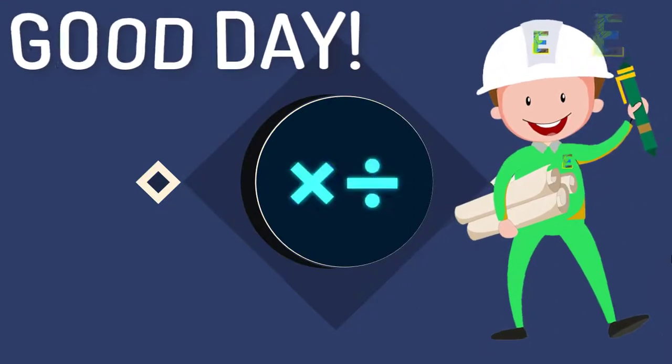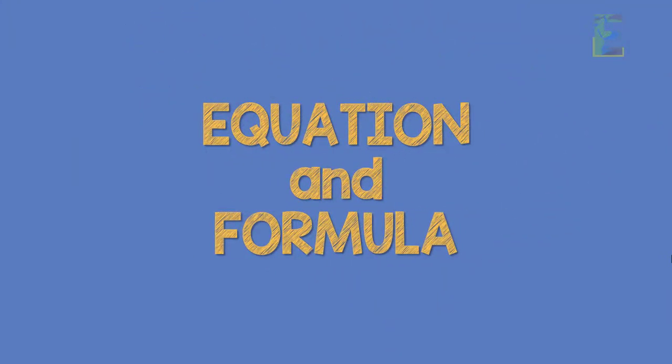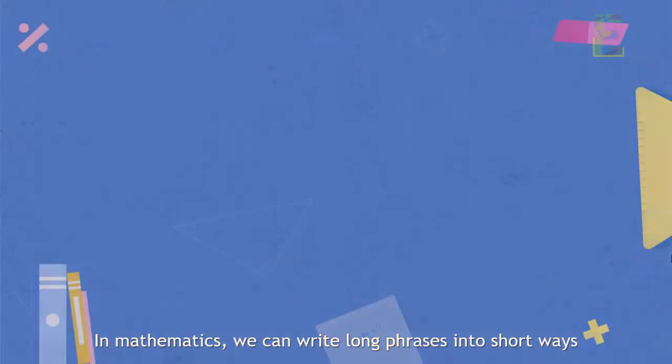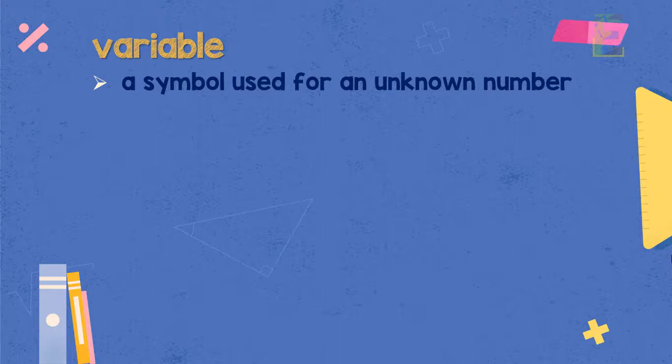These terms are called equation and formula. In mathematics, we can write long phrases into short ways using variables. A variable is a symbol for a number we don't know yet. It is usually represented by a single letter.